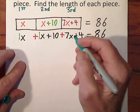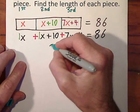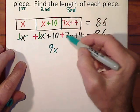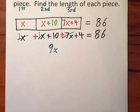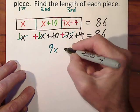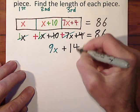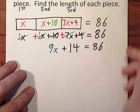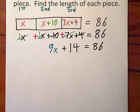That's 2x plus 7x gives us 9x. We've used up our x's here. And then we also have 10 and 4, so 10 plus 4 gives us 14. So that's plus 14. Still equals 86.